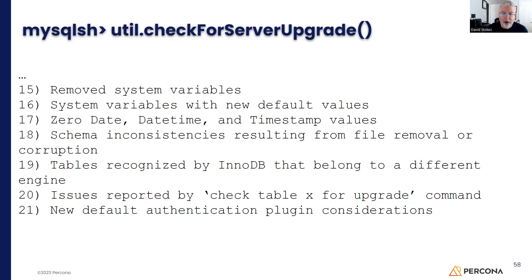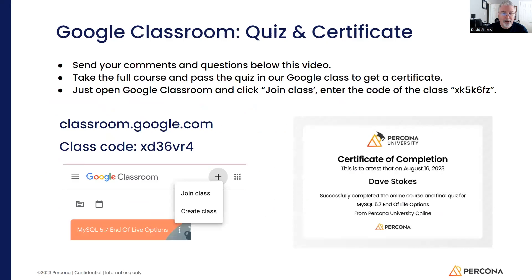We'll talk about all these in just a little more detail in just a moment. For those of you who are interested, you can go to Google Classroom and take a quiz and win a certificate. Go to classroom.google.com — the class code is xraydelta36violetrobert4 — and you'll end up with a lovely little certificate.